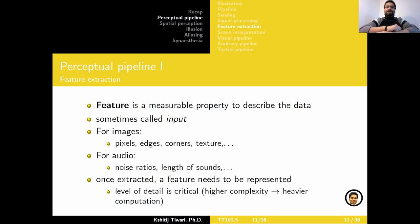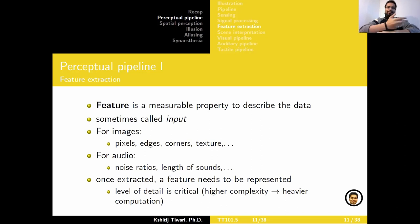When deciding on feature representations, the level of detail is critical. The higher the complexity of the representation, the more information you can capture about what's inside the data. But it might incur heavier computation. If you're interested in real-time performance guarantees, adding unnecessary computational complexity to your processing pipeline might be a bottleneck down the line. So you need to be careful about how you're representing your data at the low level.